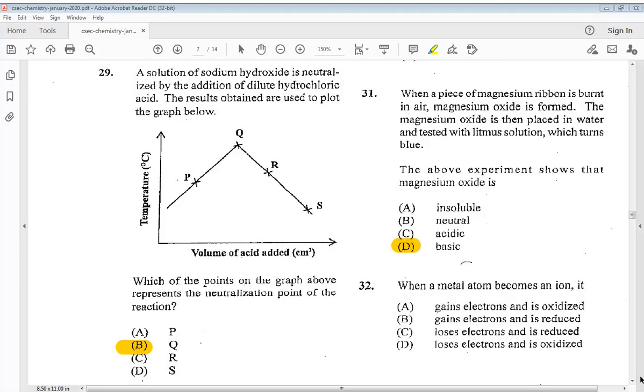Question 32. When a metal atom becomes an ion, A gains electrons and is oxidized, B gains electrons and is reduced, C loses electrons and is reduced, or D loses electrons and is oxidized. So we know it is D loses electrons and is oxidized.